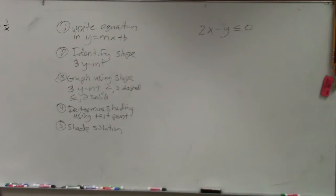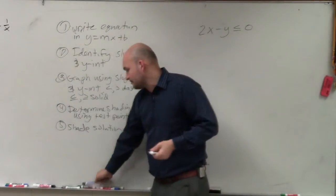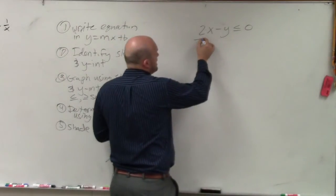If I'm going to follow my rules, first thing I'm going to do is write the equation in slope-intercept form. So to do that, I need to subtract 2x.